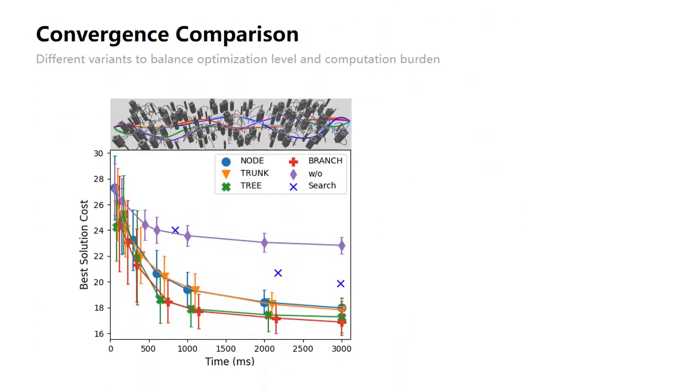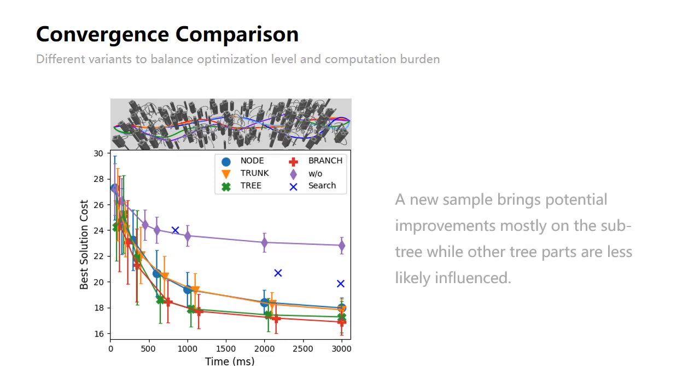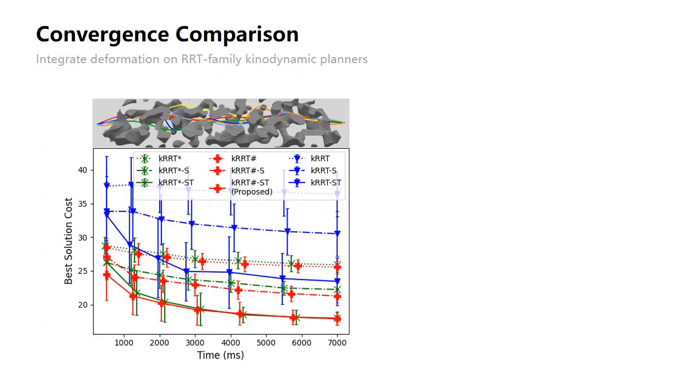The four variants are compared with each other and with a search-based kinodynamic planner, weighted A star. All the variants find the first solution within several milliseconds and quickly converge. Variant branch shows the fastest convergence. We think it is because a new sample brings potential improvements mostly on the subtree, while other tree parts are less likely influenced, and thus deforming just the subtree is a good balance.